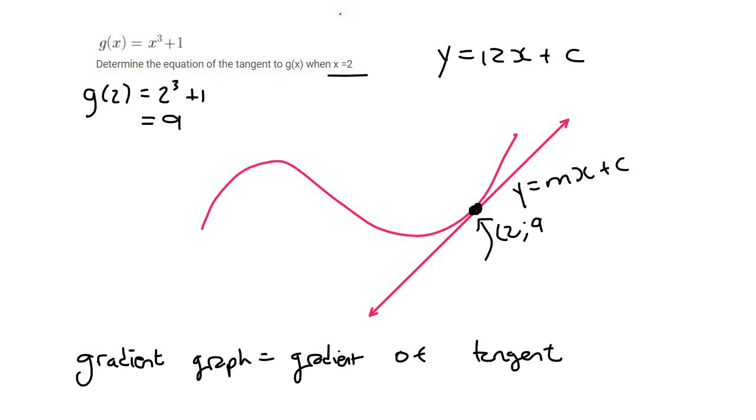Now, that point is also on the tangent, so we can use it in the tangent equation. So we can say 9 is equal to 12 times 2 plus c. So 9 is equal to 24 plus c. If you work it out, c would be negative 15. And so the equation of the tangent will be y equals 12x minus 15.